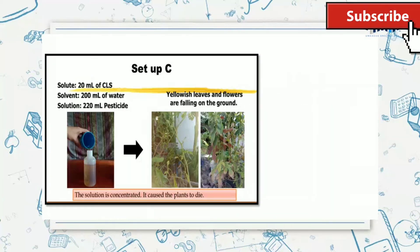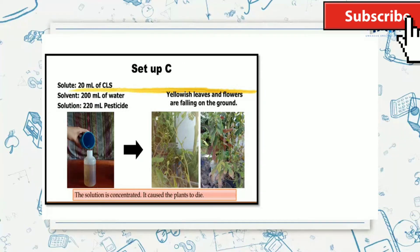In setup C, 20 ml of compost liquid substance was added into a 200 ml of water. A 220 ml pesticide was used to spray the plants in the garden. Yellowish leaves and flowers are falling on the ground. Therefore, the solution is concentrated. It caused the plants to die.